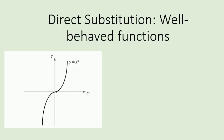Direct substitution: if you have a look at this beautiful s-shaped graph, y equals x cubed, the limit of x cubed as x approaches 0 — what is that? If you get closer and closer to 0 from the left, the limit of x cubed as x approaches 0 from the left, you notice that we get closer and closer to y equal to 0. So that's 0.